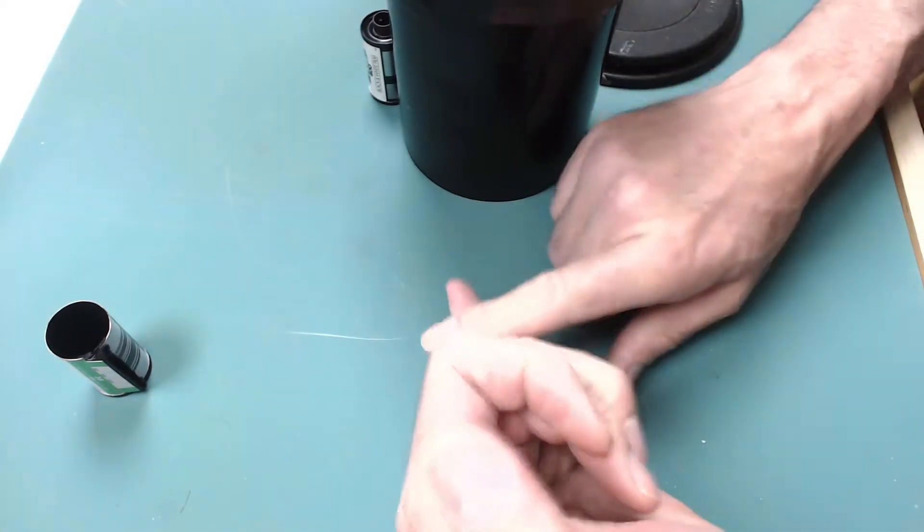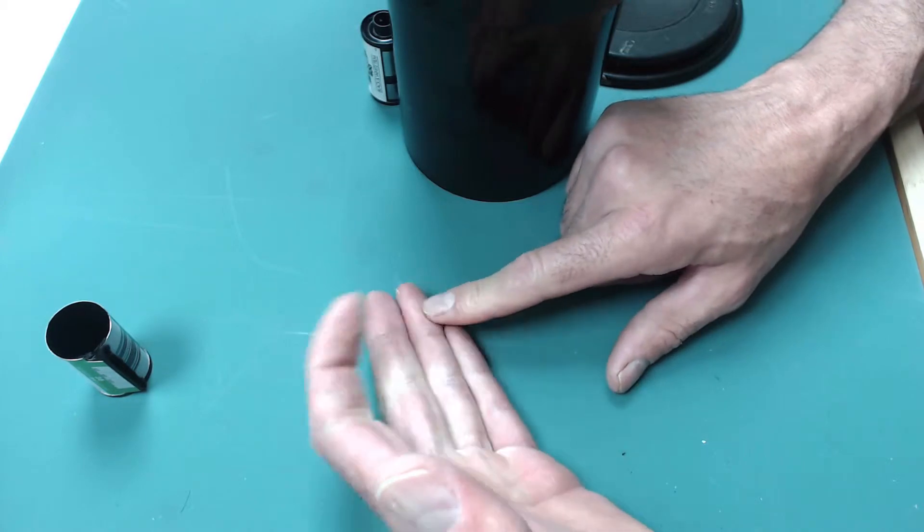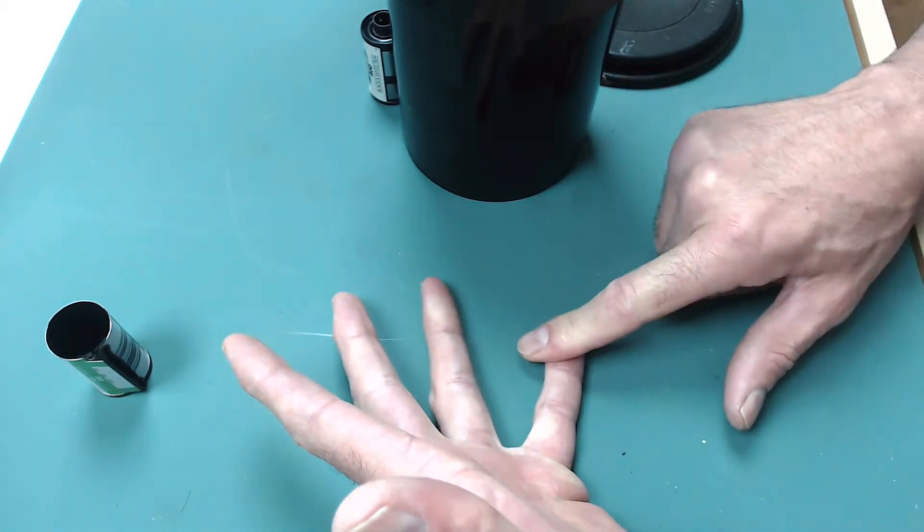Chemicals. There's two key chemicals: the developer and the fixer. You can use a stop in between those two chemicals which neutralizes the developer.